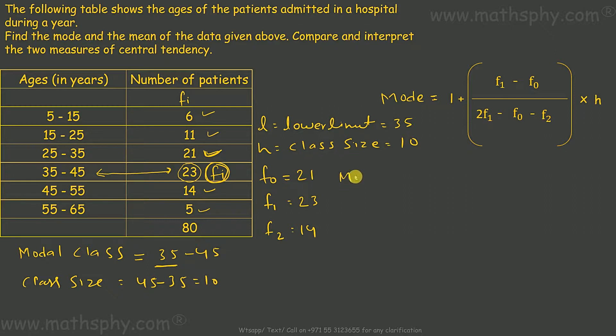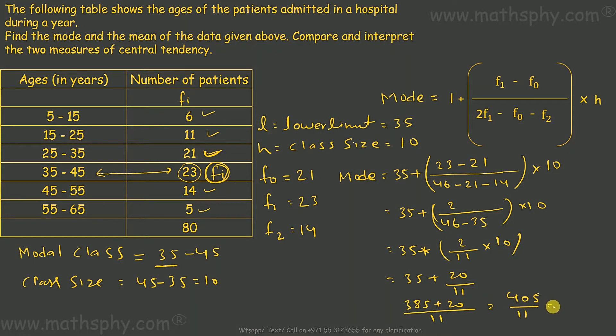Mode would be L, lower limit 35, plus (F₁ minus F₀) over (2F₁ minus F₀ minus F₂) times class size. So 35 plus (23 minus 21) over (2 times 23 minus 21 minus 14) times 10, which comes to 36.82. So the mode of this data would be 36.82, meaning the patients of age 36.82 years are the maximum patients admitted to the hospital.